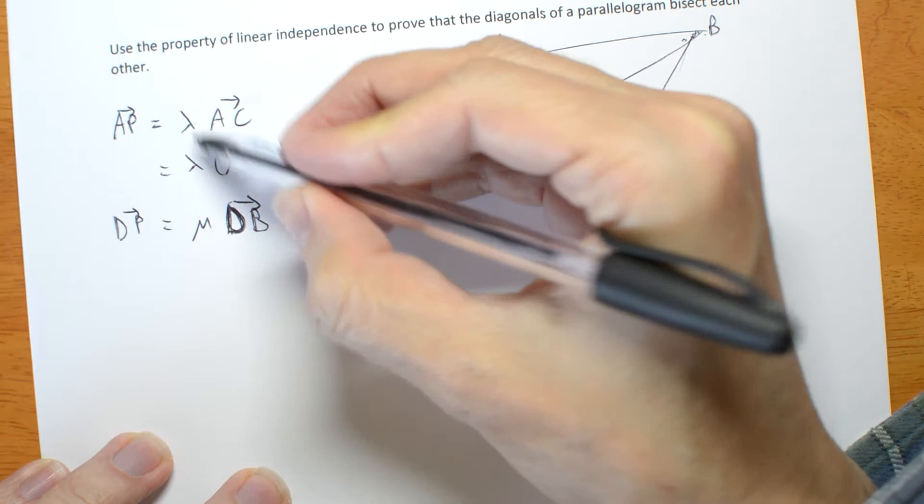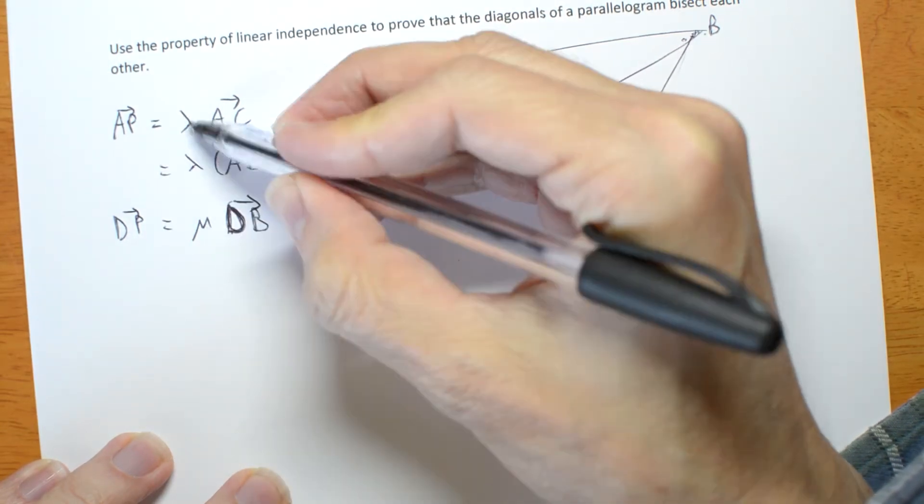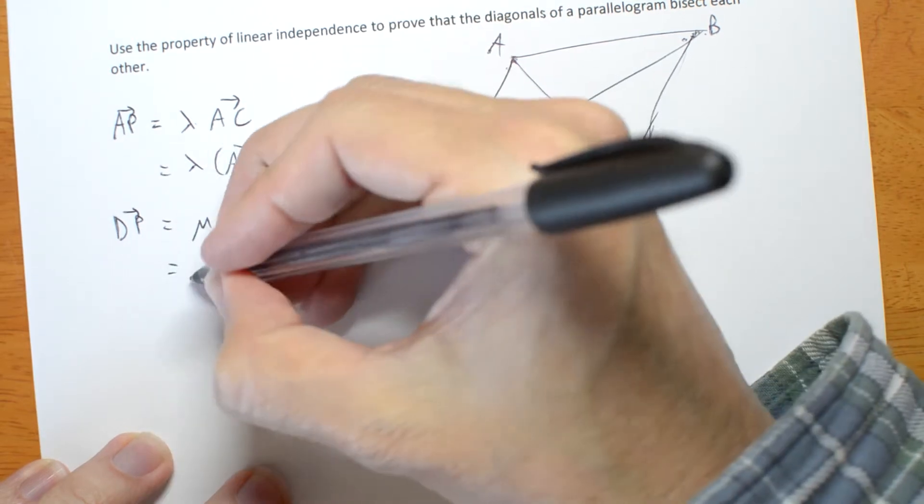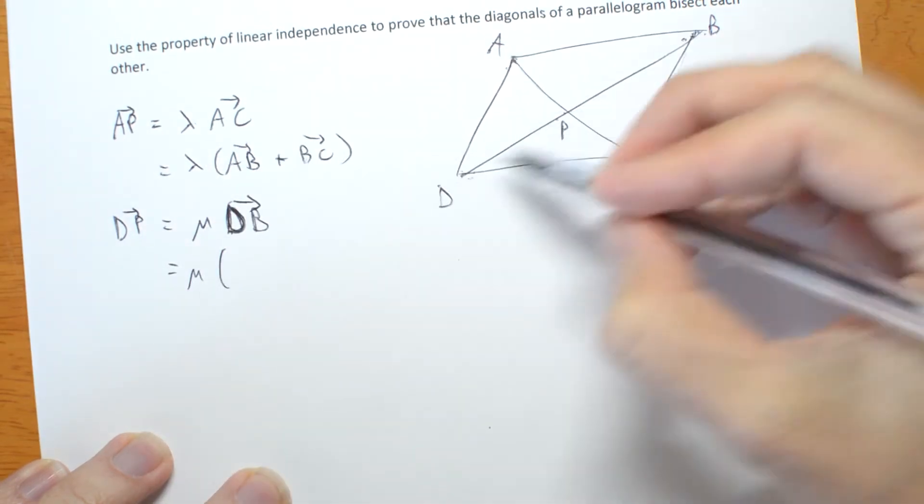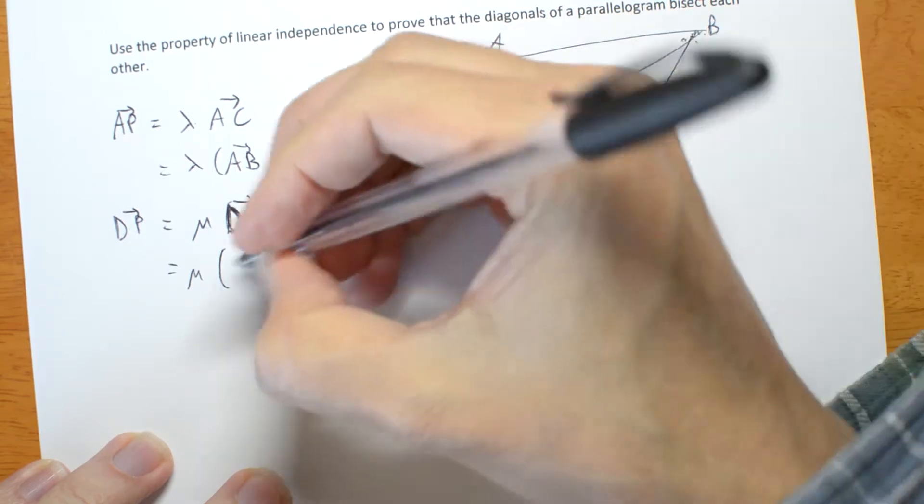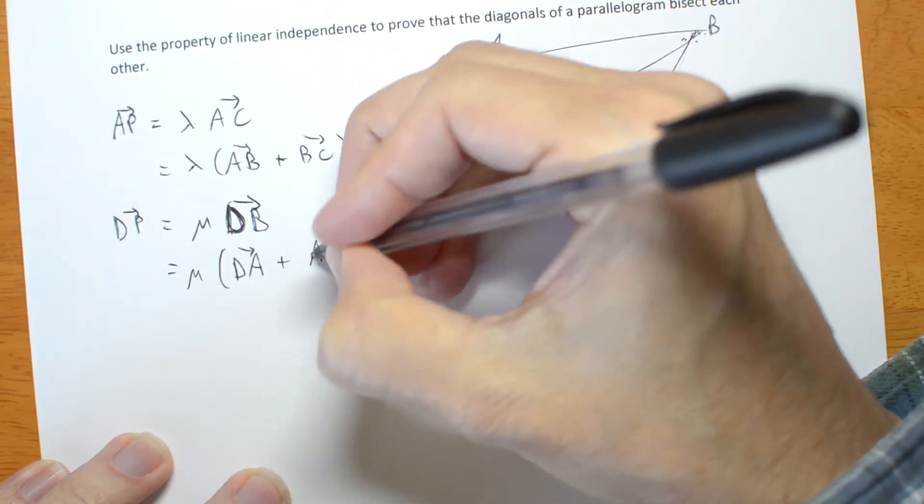My job is going to be to prove that both this and this, both of these numbers are a half. But think about DB. DB is the same as DA and AB, DA plus AB.